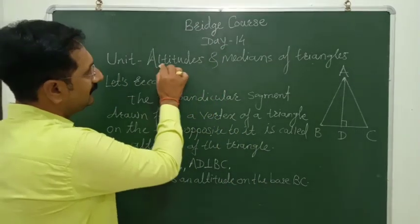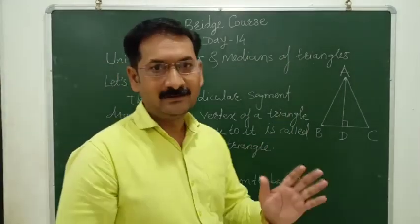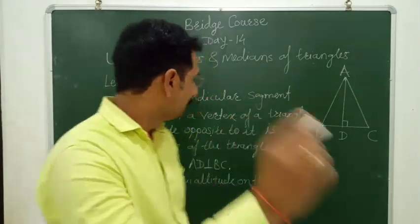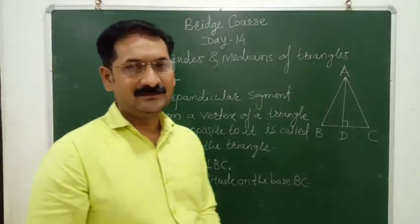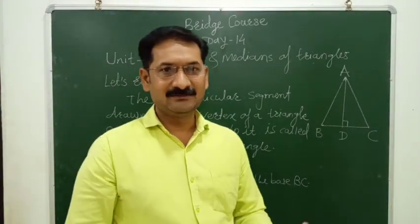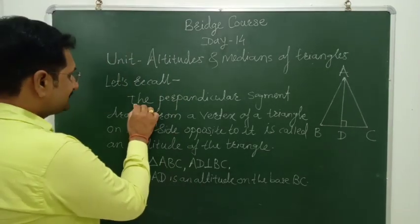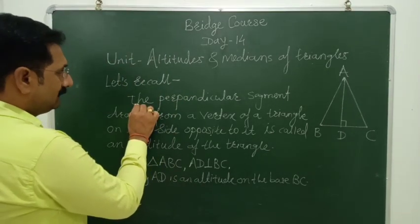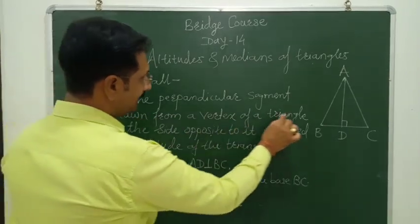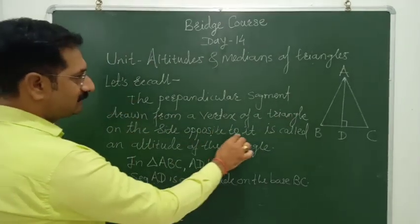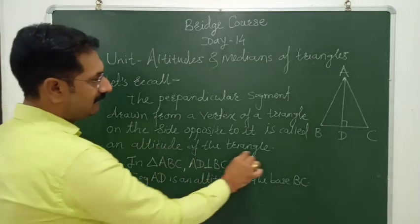Our topic is altitude and medians of triangle, unit of Day 14. So friends, let's recall what we studied in standard 8. Let's study about the altitude. The perpendicular segment drawn from a vertex of a triangle on the side opposite to it is called an altitude of a triangle.